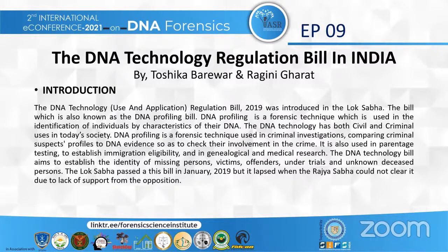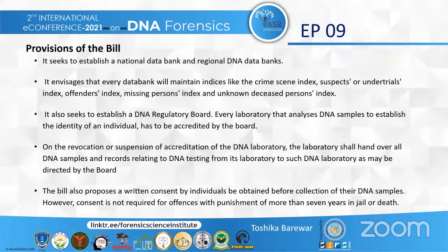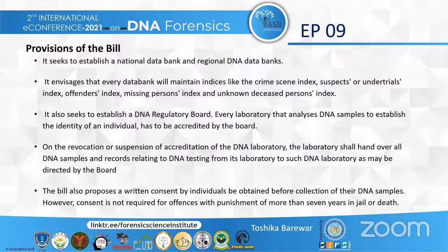Moving to the provisions of the bill: it seeks to establish a national data bank and regional data banks. Every data bank will maintain indices like a crime scene index, suspects or under trial index, offender index, missing person index and unknown deceased person index. It also seeks to regulate DNA testing and analysis by providing for accreditation, establishment of national and regional DNA data banks to store and maintain DNA profiles, and a DNA regulatory board for their governance.